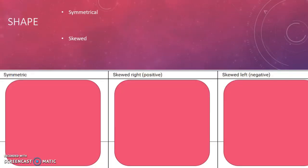We'll start with shape. The shape can either be symmetrical or it can be skewed. You're probably familiar with the idea of symmetrical because it means that one side is the same as the other.